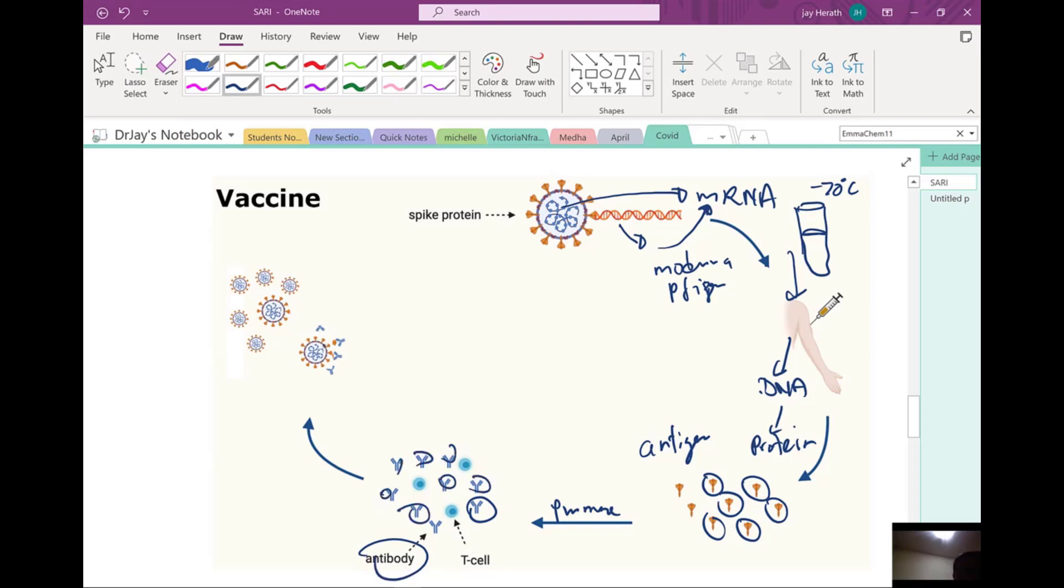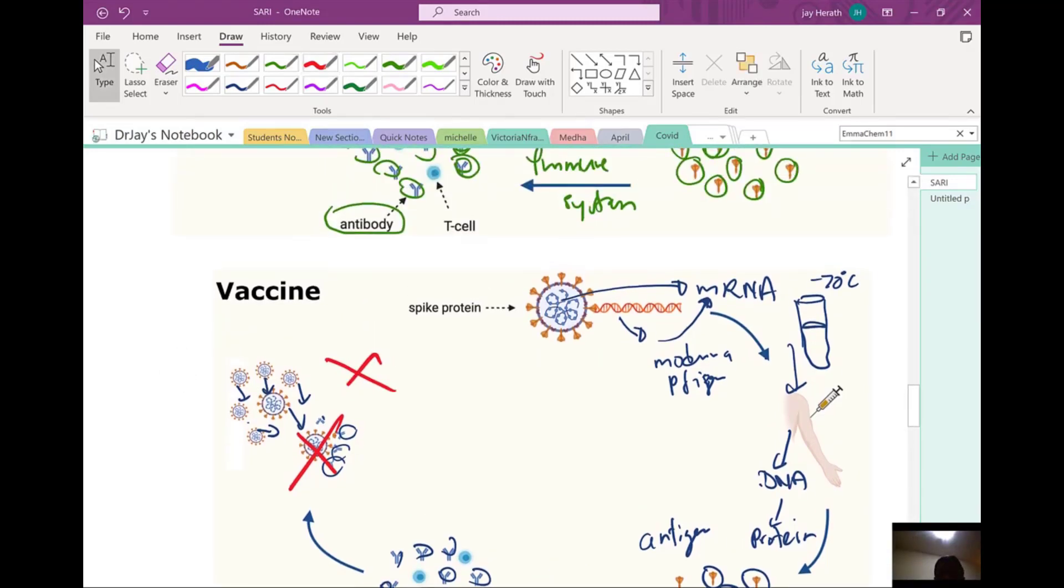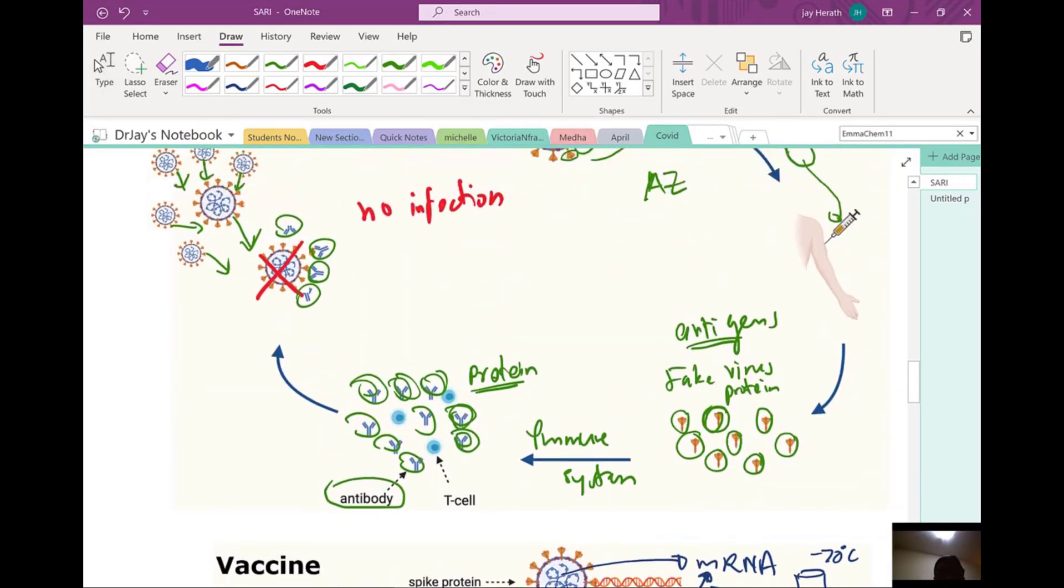And then again, the infection takes place. They come into the body through the airways. What happens? The antibodies go and bind and neutralize the virus. So no more infection again. That's how you stop the infection. Those are the two drugs. What's the important thing? They are slightly different mechanisms, but they will provide the protection.